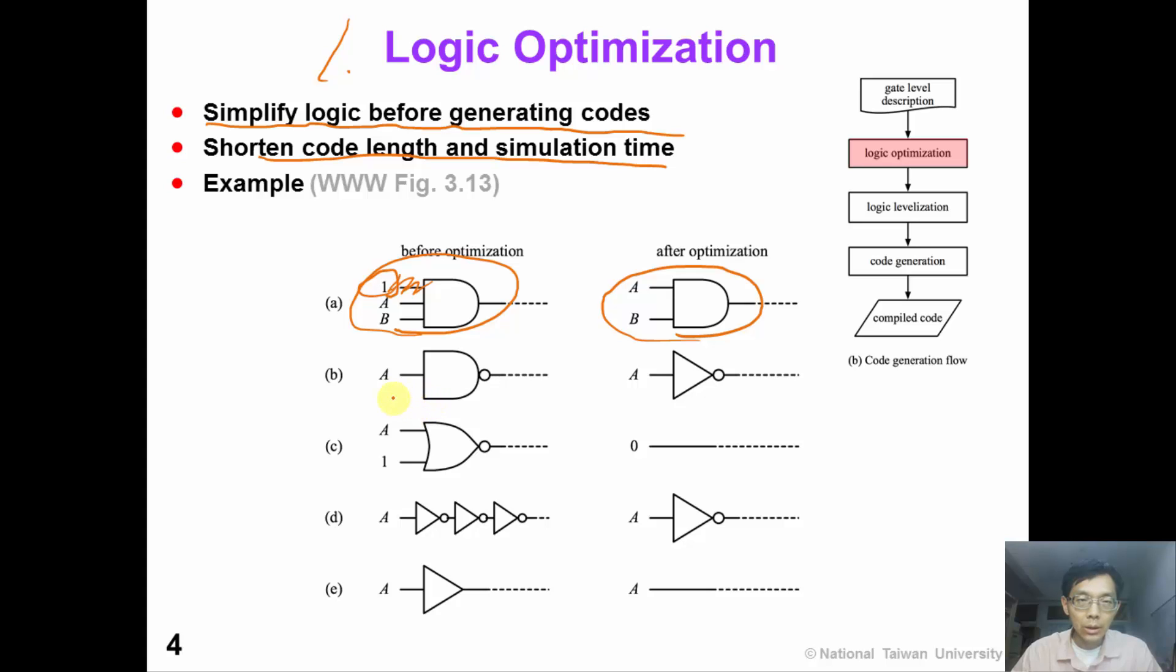If we have an AND gate with one simple input, this is equivalent to an inverter. If we have a two input NOR gate with one input tied to 1, which is a controlling value, then this is simply a logic 0. Or if we have a sequence of three inverters, we can simply reduce it to one inverter. If we can simplify our circuit, our simulation would be faster.